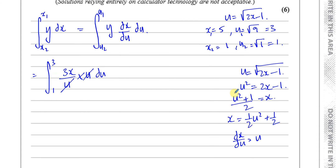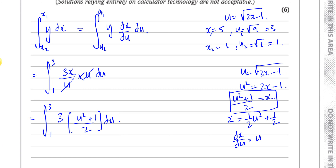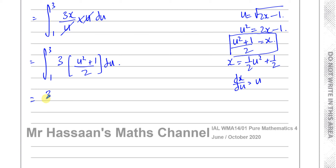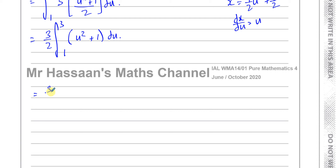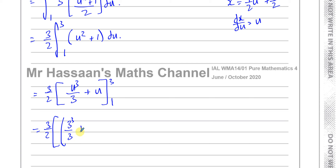I can replace x with (u squared plus 1) over 2. So the integral becomes, between limits 3 and 1, 3 times (u squared plus 1) over 2, du. I can simplify by writing 3 over 2 outside the integral, giving (3/2) times the integral from 3 to 1 of (u squared plus 1) du. That integrates easily: I get u cubed over 3 plus u.